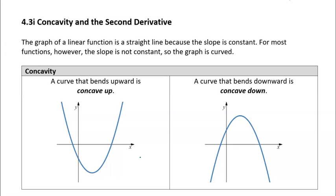Concavity has to do with the curvature of a function. A line doesn't have any curve to it — the slope is constant at any point of a line. But if the function is not a line, it has some sort of curvature. If the function has a shape like a U and bends upward, we say it's concave up. You can remember that because it looks like a U — U for up.